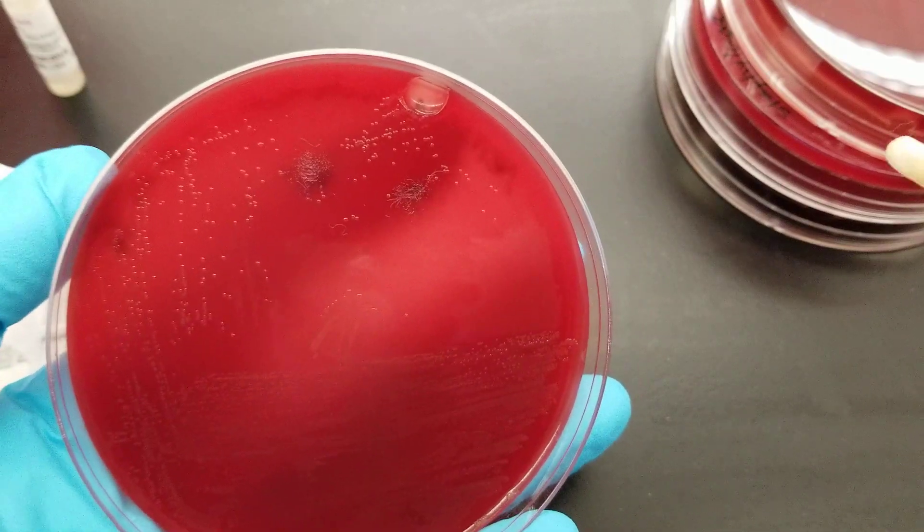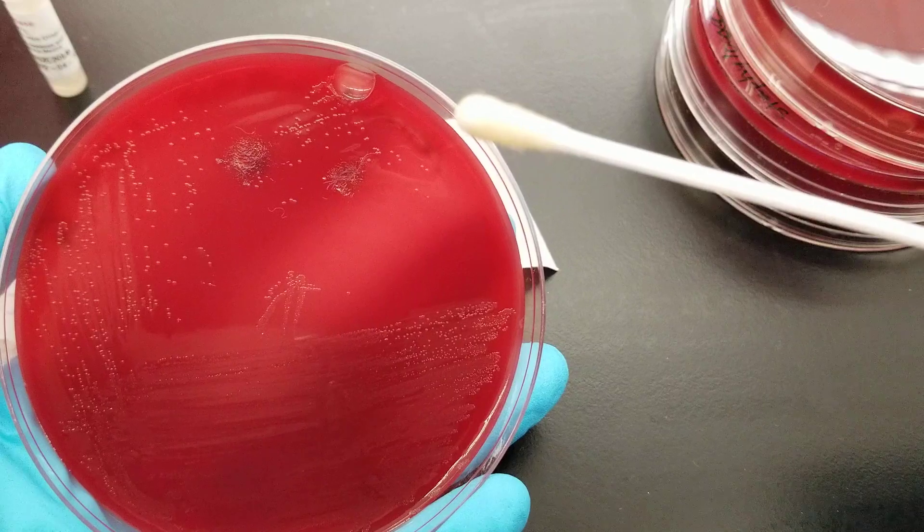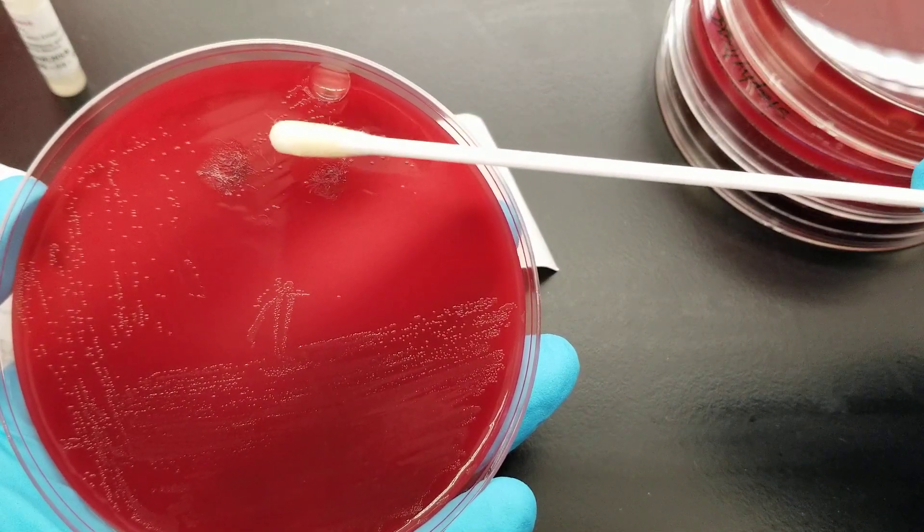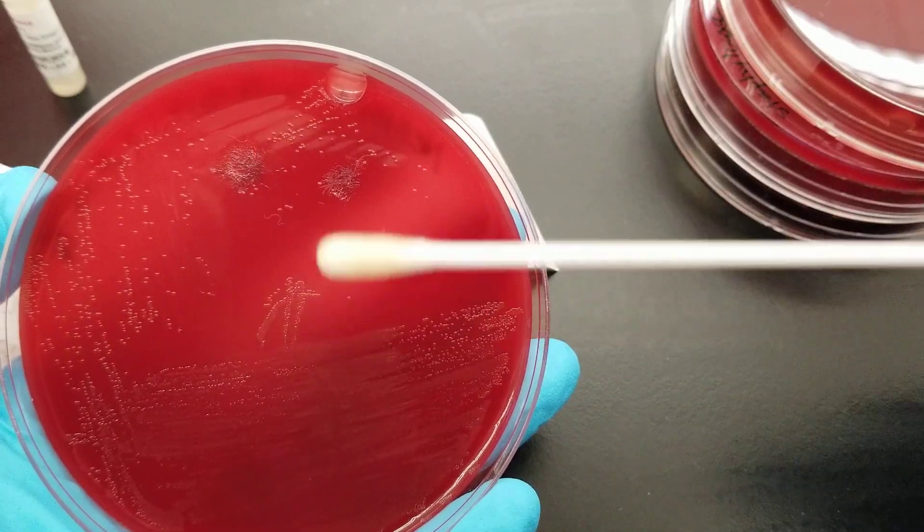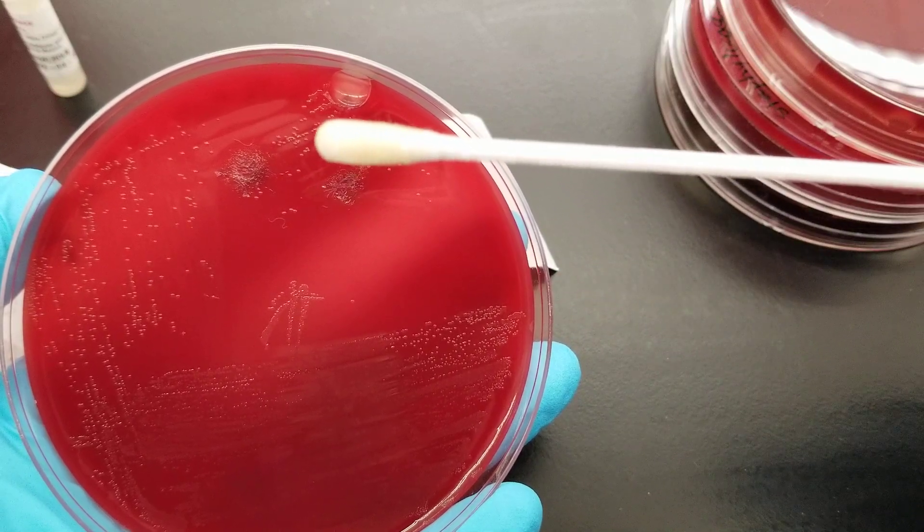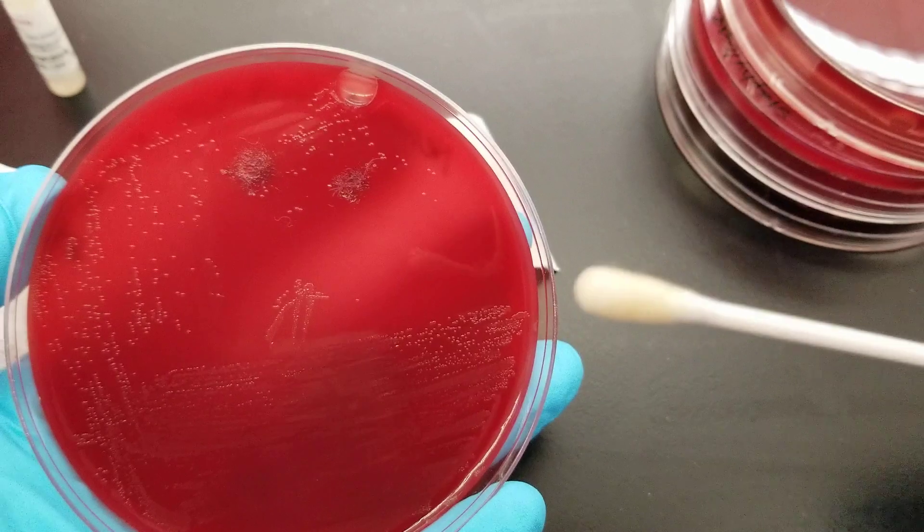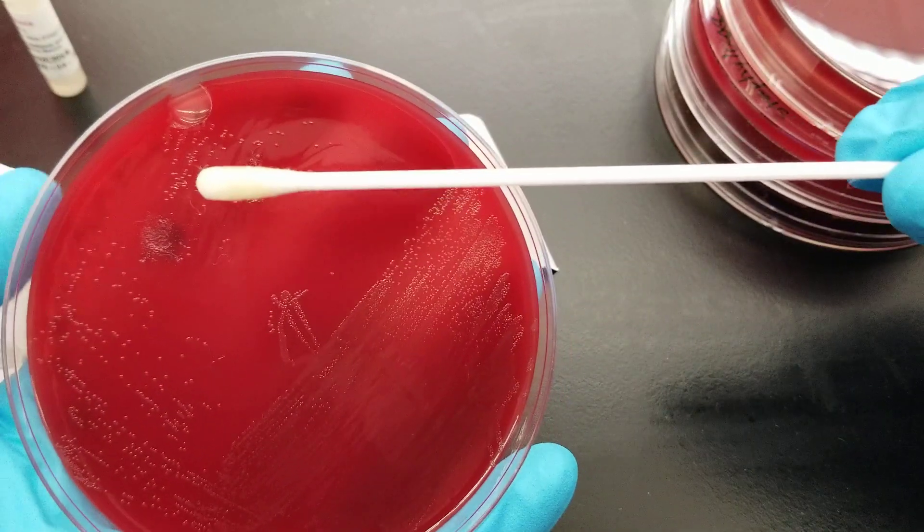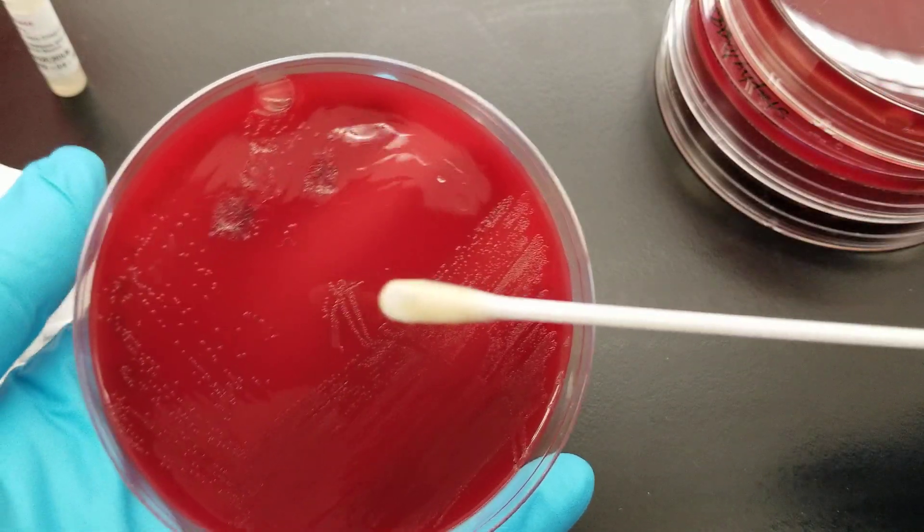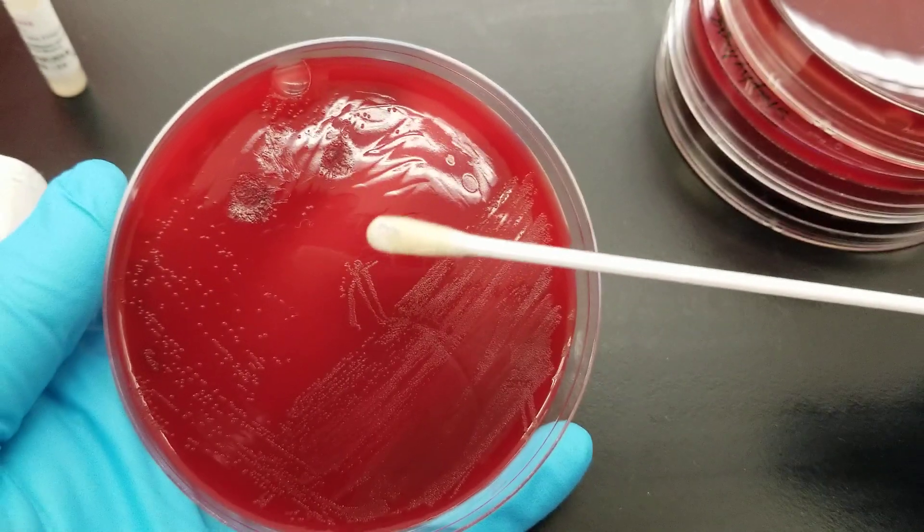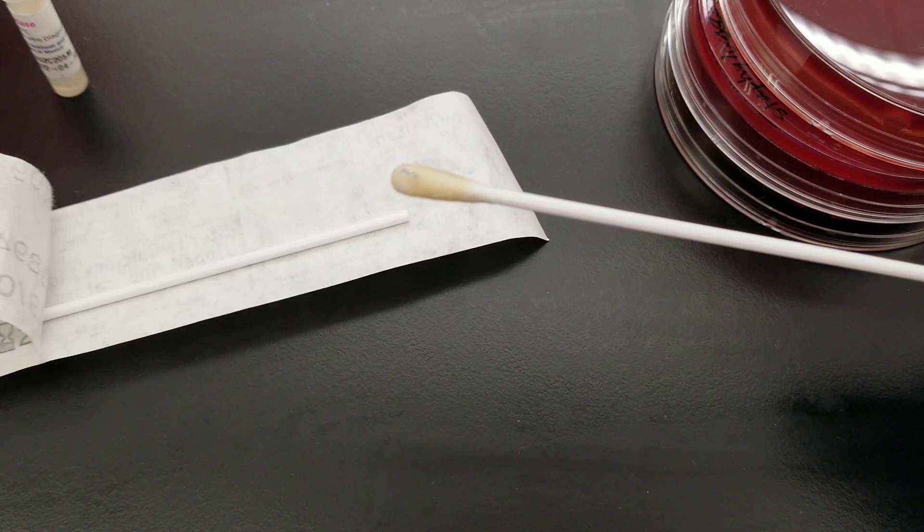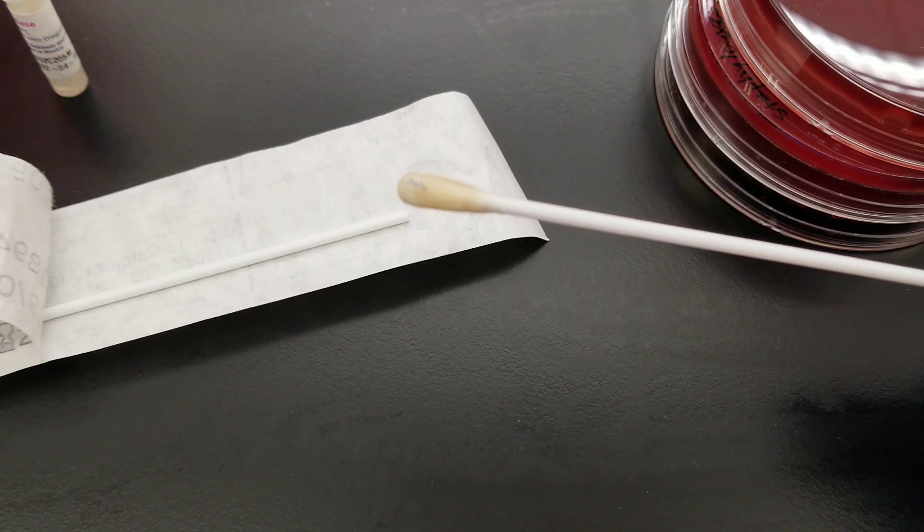Make sure that the wet part of the swab is going to go onto the colonies that you want. This is a pure culture. If it was not a pure culture, you'd want to go out to where you have a particular colony that you want to test. So I'm going to go and pick up some from the pure side and you're looking for an immediate change. That is purple. You can see it right there. An immediate change means that it's positive. You're looking for blue or purple.